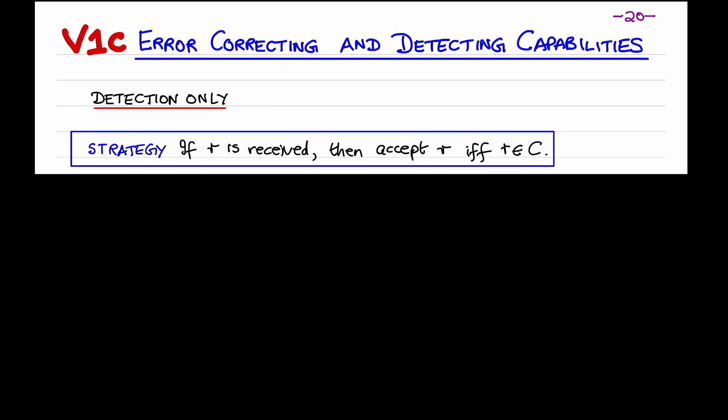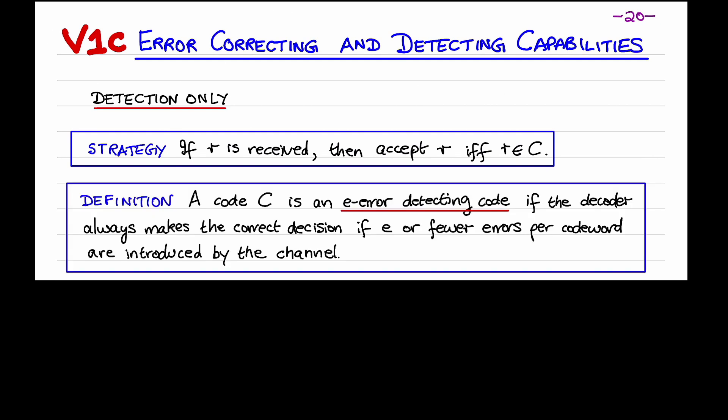Let's first determine the error-detecting capability of a block code. We're considering the scenario where the code is used for detection only. Recall that our decoding strategy in this scenario is that if R is received, then the channel decoder accepts R if and only if R is a codeword. We have a definition: the code C is an E error-detecting code if the decoder always makes a correct decision if E or fewer errors per codeword are introduced by the channel.